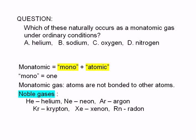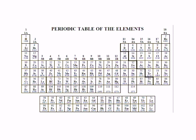Therefore, the correct answer is A. Among the choices given, only helium is the noble gas. You will find the noble gases in the rightmost column of the periodic table, column 18. The family or group of elements is often referred to as group 8A or group 0.